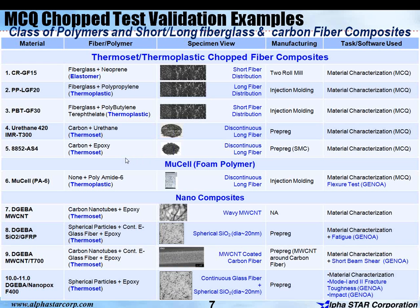The validation data bank of MCQ Chopped is shown here, where there are different types of chopped fibers being used — for example, elastomer, thermoplastic, and thermoset. These have been validated and these examples are included in the MCQ Chopped software. Other chopped fibers are also validated, for example, microcell foam polymers and some nano-composites.